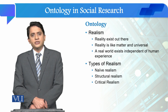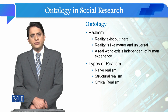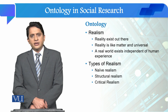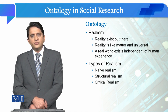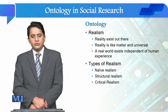different ontologies exist in social sciences, and it is unlike natural sciences. In natural sciences, we try to understand the world and reality is something independent of the mind. Reality is like a matter and exists out there. But in social sciences, we have different ontologies. Let's see what the first ontology is.